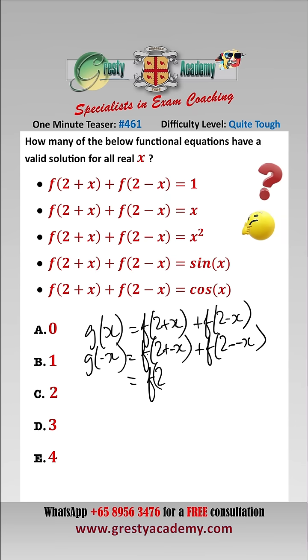which equals f of 2 minus x plus f of 2 plus x, which equals g of x. Therefore, we know that the left-hand side on all of these functional equations is an even function,